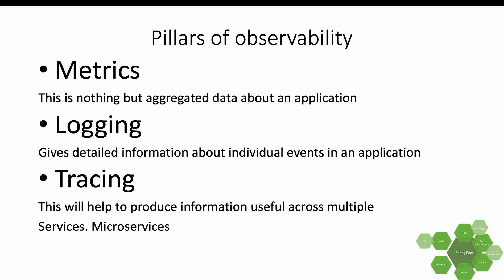With metrics, we want to get aggregated data about an application. Aggregated data means total web requests that came to the application, how many of those requests were successful, how many were unsuccessful, and things like the average time it took to execute orders. Those are the aggregated data we're talking about.